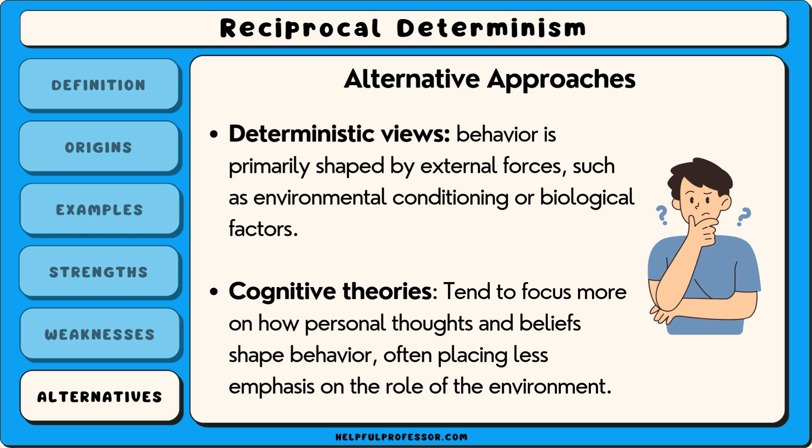On the other hand, cognitive theories, like those stemming from cognitive behavioural therapy, tend to focus more on how personal thoughts and beliefs shape behaviour, often placing less emphasis on the role of the environment. These alternatives provide more focused explanations, but may not fully capture the complexity of human behaviour as reciprocal determinism does.